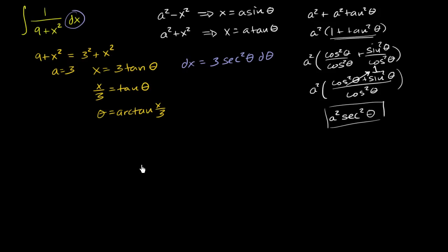So now it looks like we're armed with all of the things necessary to rewrite this entire integral. It's going to be equal to the indefinite integral. You're going to have dx here, which is equal to 3 secant squared theta d theta. That's the dx. And all of that's going to be over this business right over here, our a squared plus our x squared.